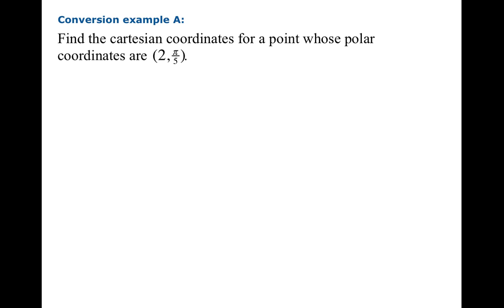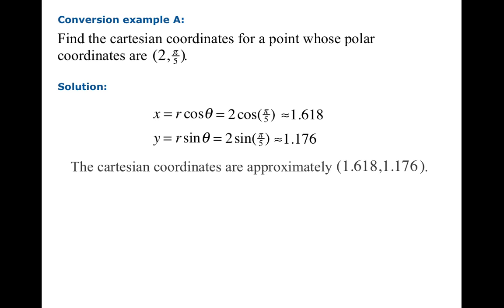So let's look at an example of the conversion formulas in action. Find the Cartesian coordinates for a point whose polar coordinates are (2, π/5). And the solution here is quite straightforward. Going from polar to Cartesian is rather easy. You just apply these formulas and you get the following coordinates. So the Cartesian coordinates are approximately so. And here's a fun fact: π/5 happens to be an angle we could find the cosine and sine of exactly. We won't go into that now.